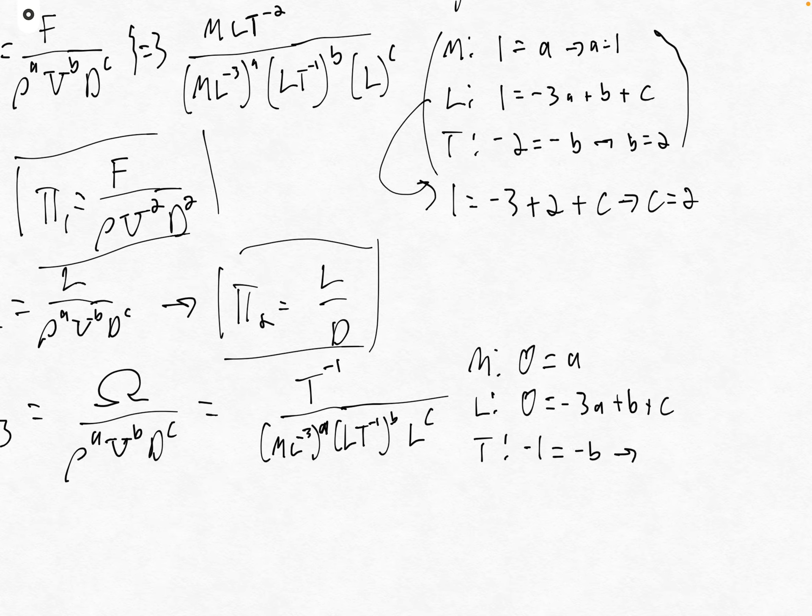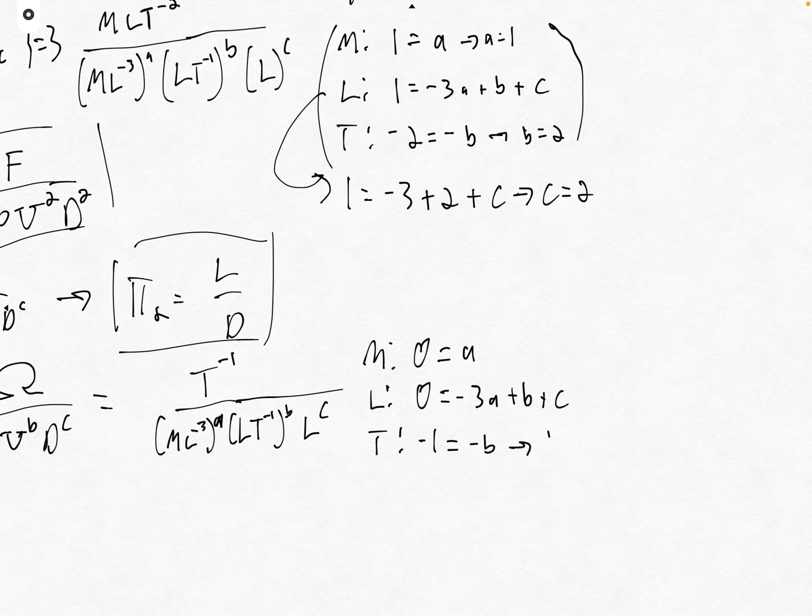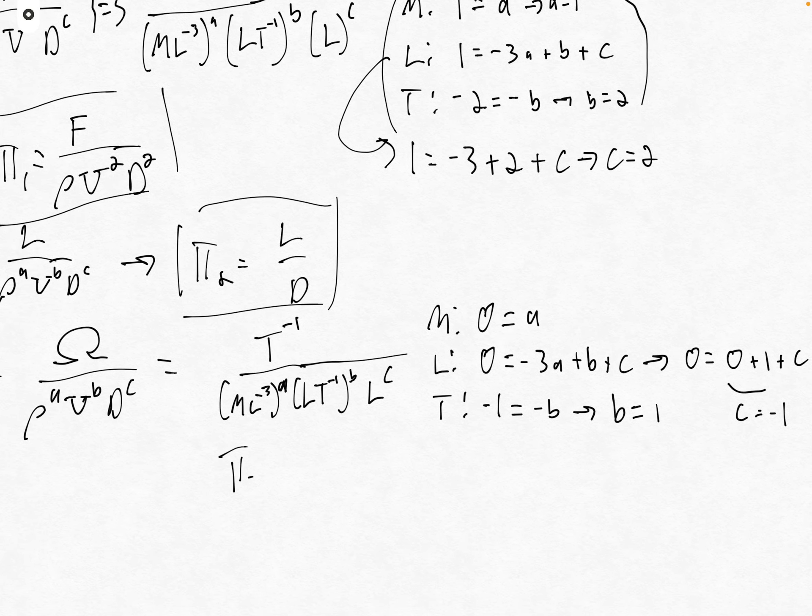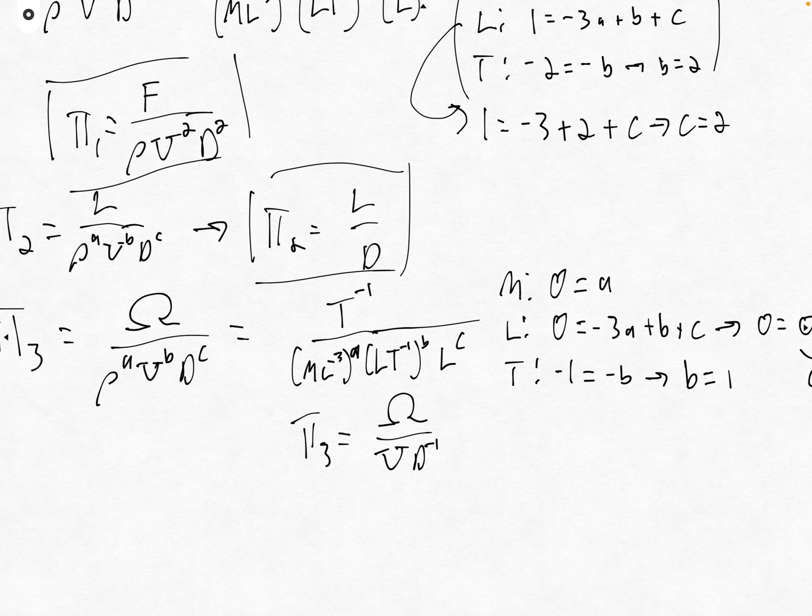From this, b equals one. From the middle equation, a equals zero. We have zero equals zero plus one plus c, so c equals minus one. Our pi three equals omega over u times d to the minus one, or omega d over u.